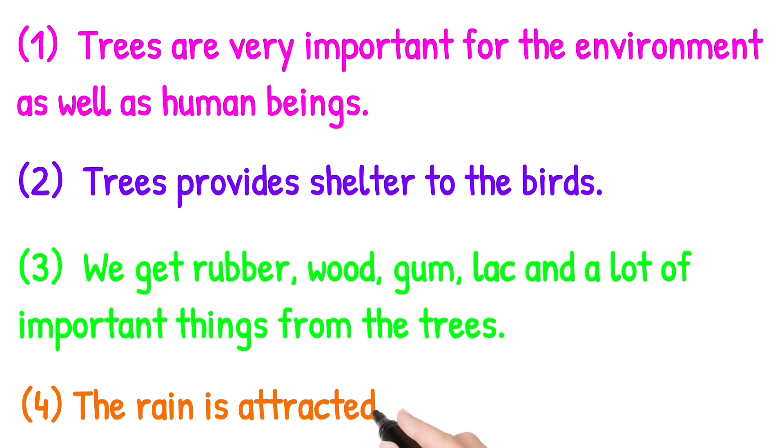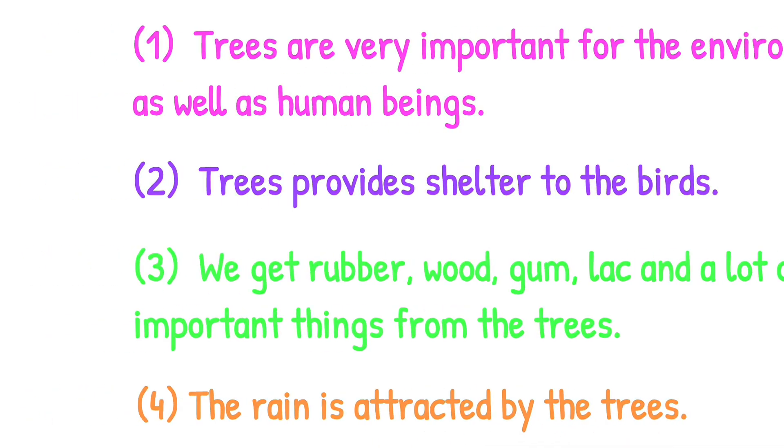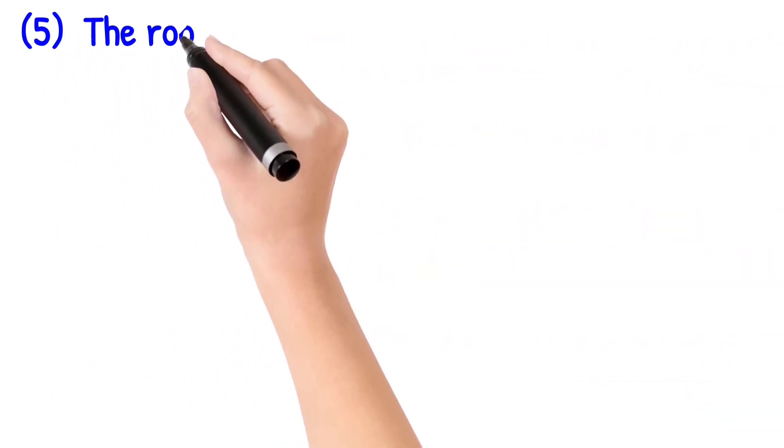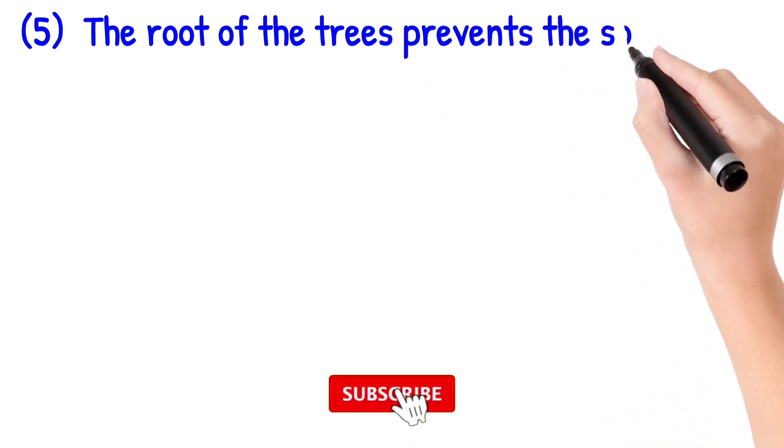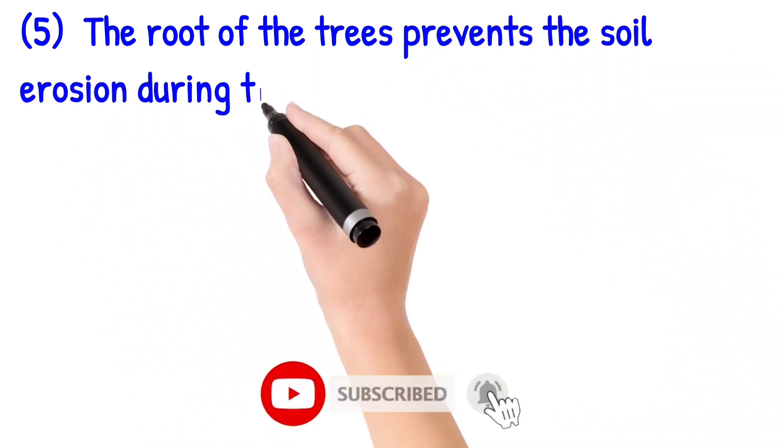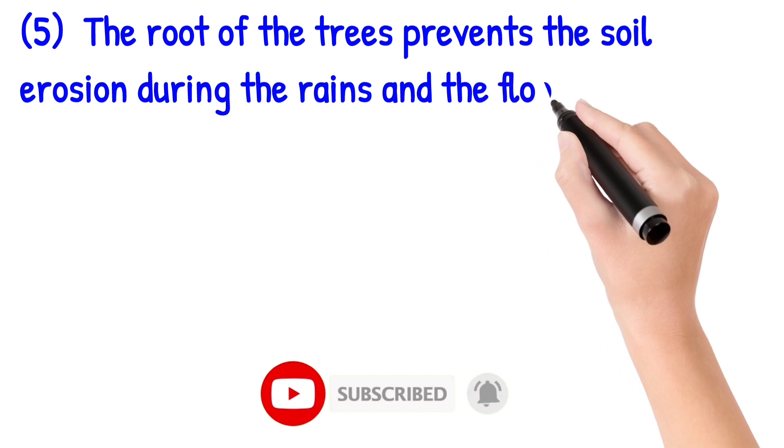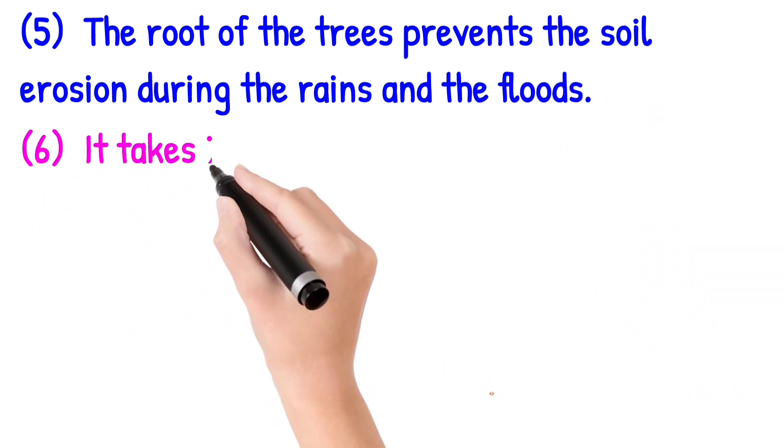Fourth point: Rain is attracted by trees. Fifth point: The roots of trees prevent soil erosion during rains and floods.